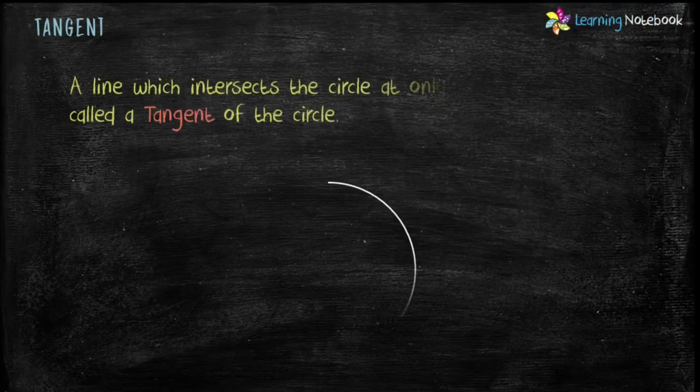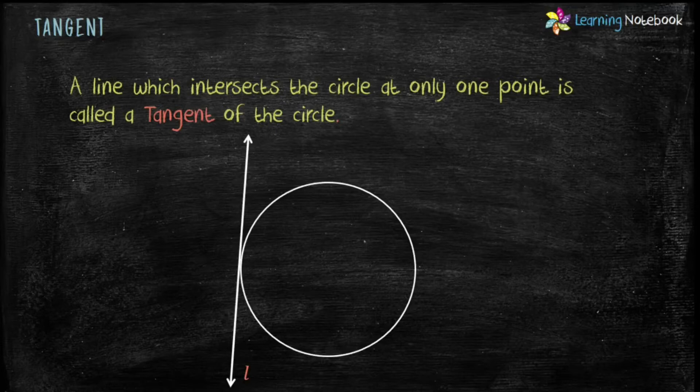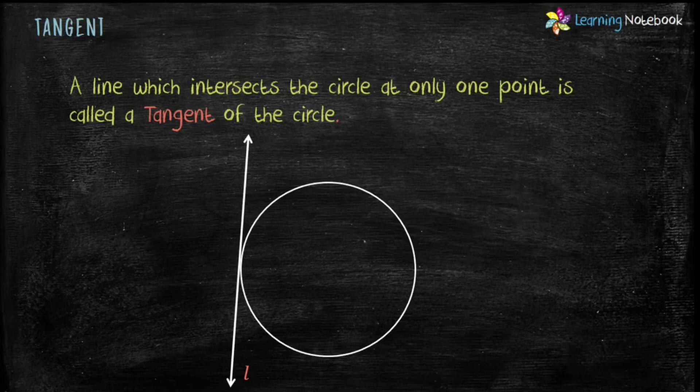A line which intersects the circle at only one point is called a tangent of the circle. Like here, line L is tangent to the circle which is intersecting the circle at point P. And point P is the point of contact. It is the only point which is common to the tangent and the circle.